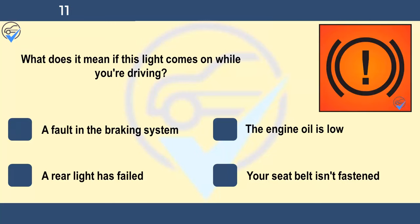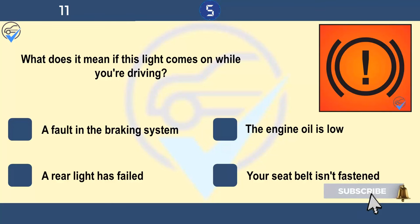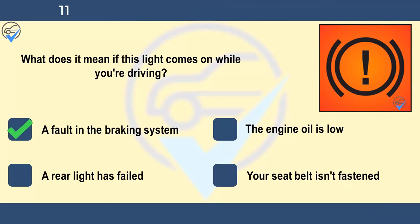What does it mean if this warning light comes on while you're driving? A fault in the braking system, the engine oil is low, a rear light has failed, or your seatbelt isn't fastened. If this light comes on, you should have the brake system checked immediately. A faulty braking system could have dangerous consequences.